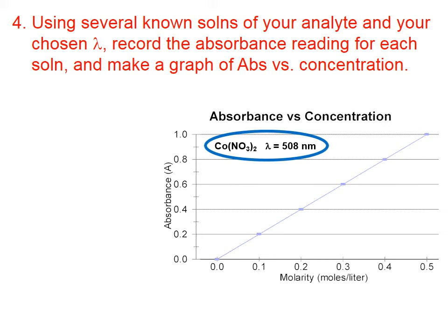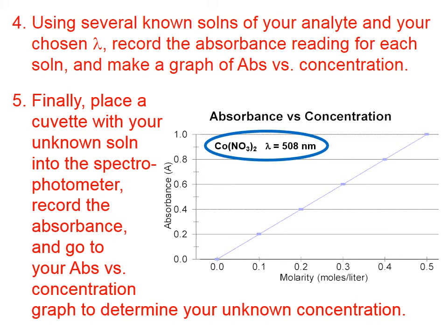Finally, place a cuvette with your unknown solution into the spectrophotometer, record the absorbance, and go to your absorbance versus concentration graph to determine your unknown concentration. We take our unknown concentration solution of cobalt-2 nitrate, put it in the cuvette, run it through the spectrophotometer, and it gives us an absorbance value. Let's say it's 0.5 — that means the concentration of our unknown solution is going to be somewhere around 0.25 molar.